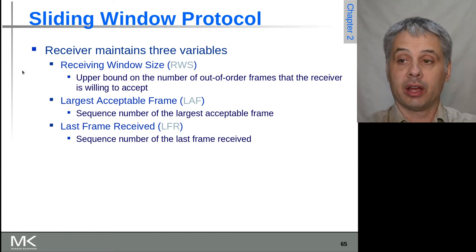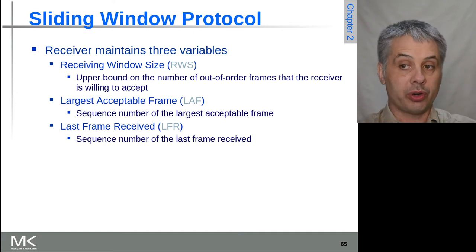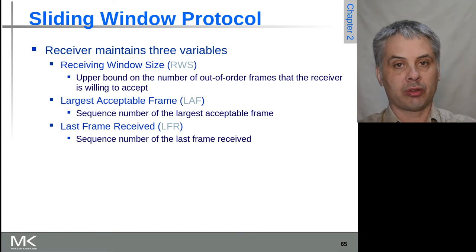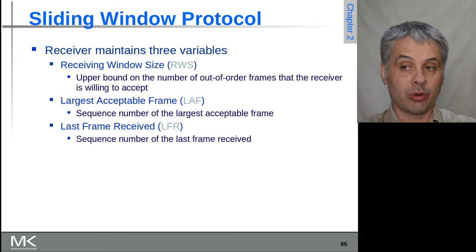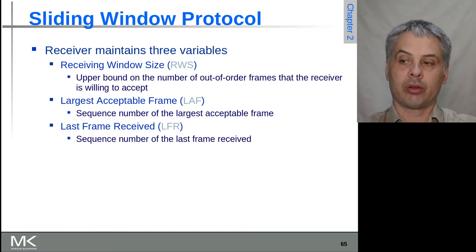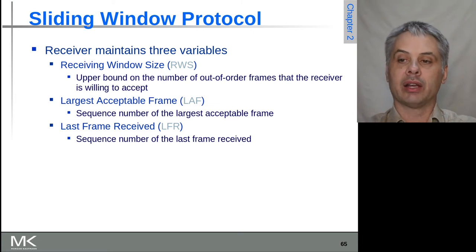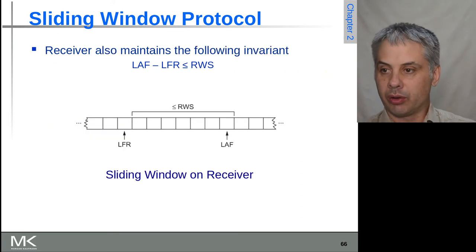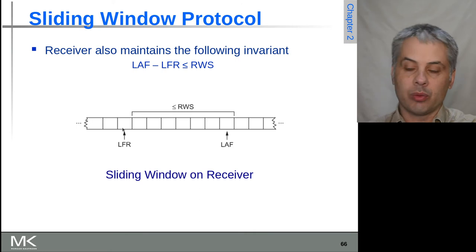On the receiving side, the receiver also needs to keep track of its receive window size — the upper bound on the number of out-of-order frames it will hold. Just as the sender must be able to resend frames within the window, the receiver must be willing to buffer frames up to the window length that have arrived out of order. The two key variables are the last frame received (LFR) — the sequence number of the last in-order frame dispatched — and the largest acceptable frame (LAF), which equals LFR plus the receive window size.